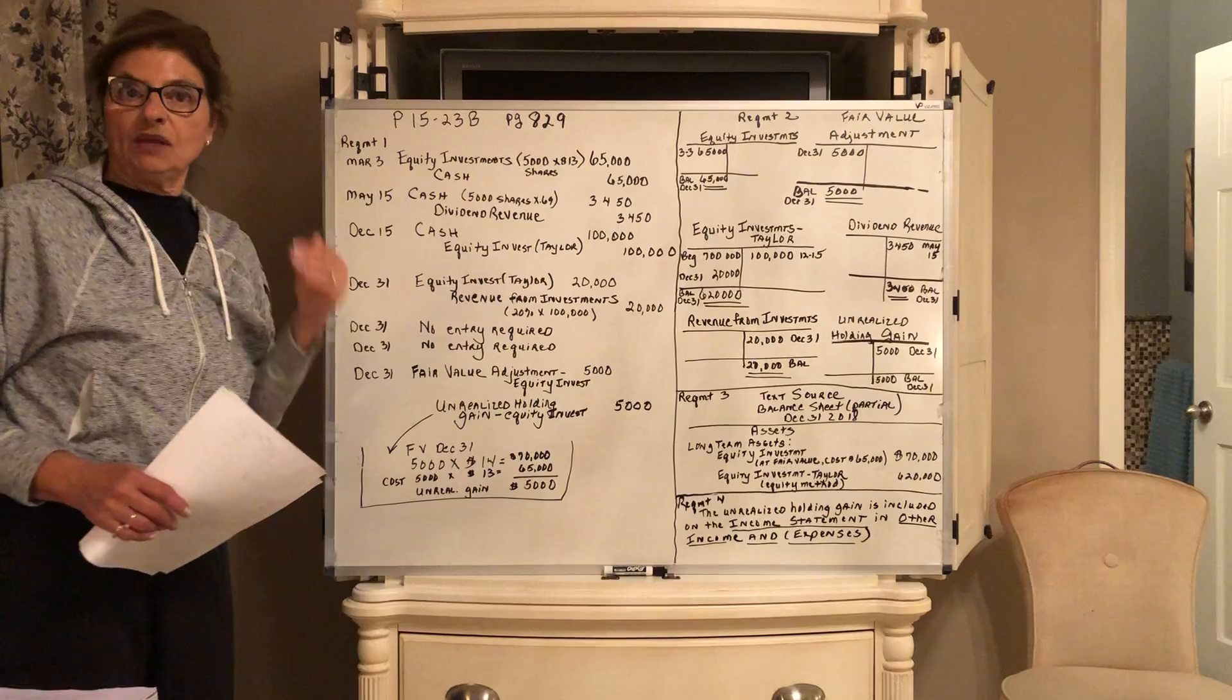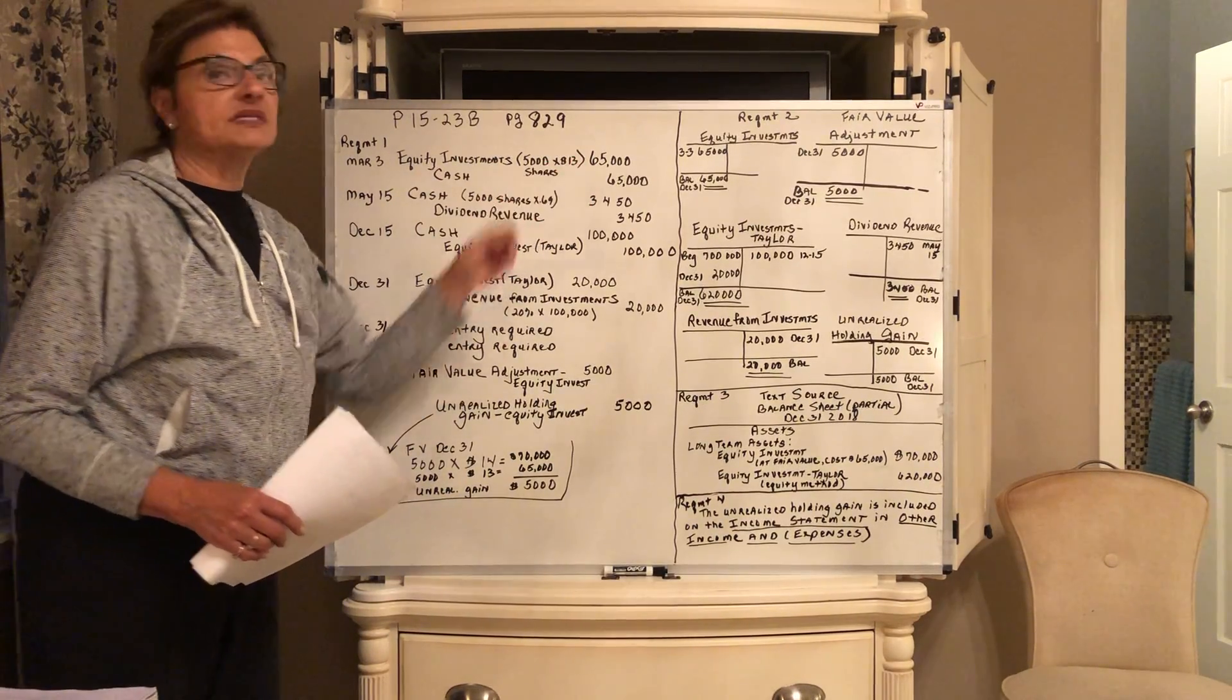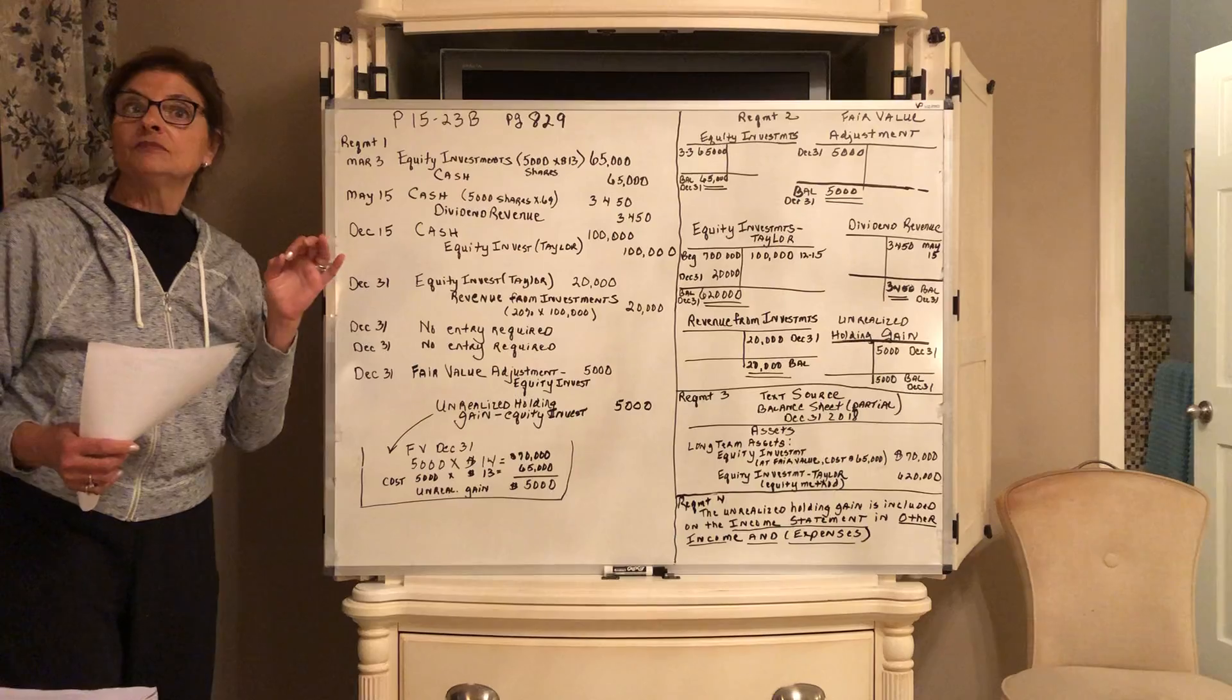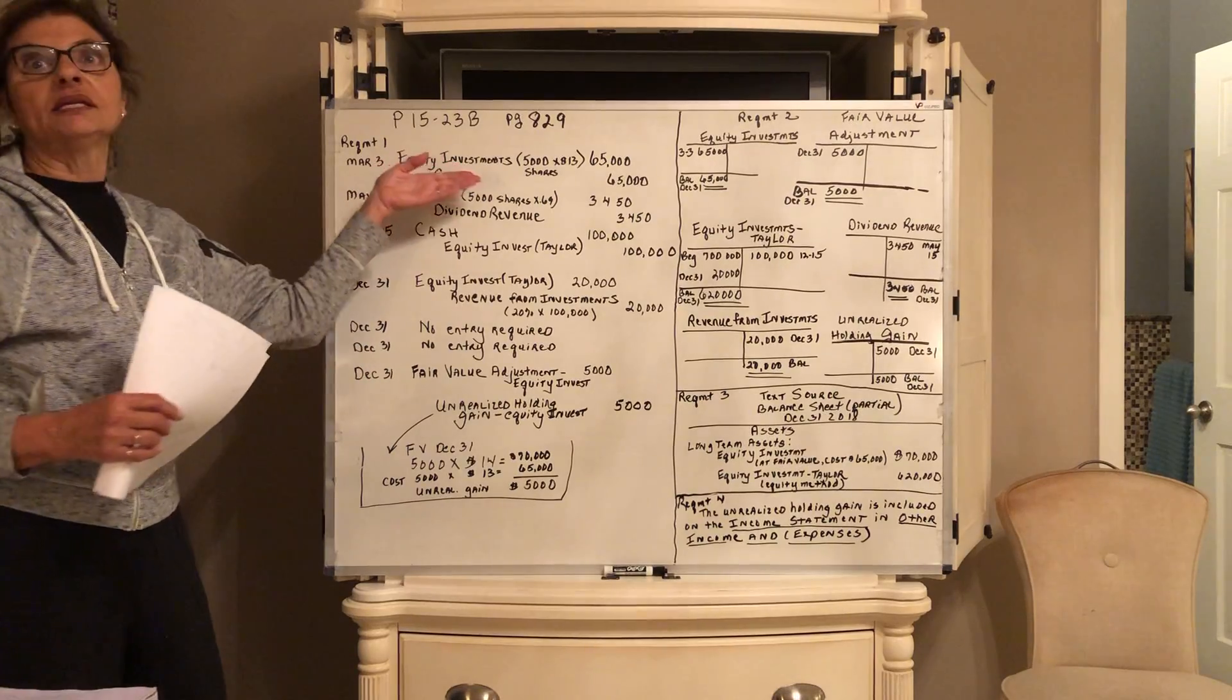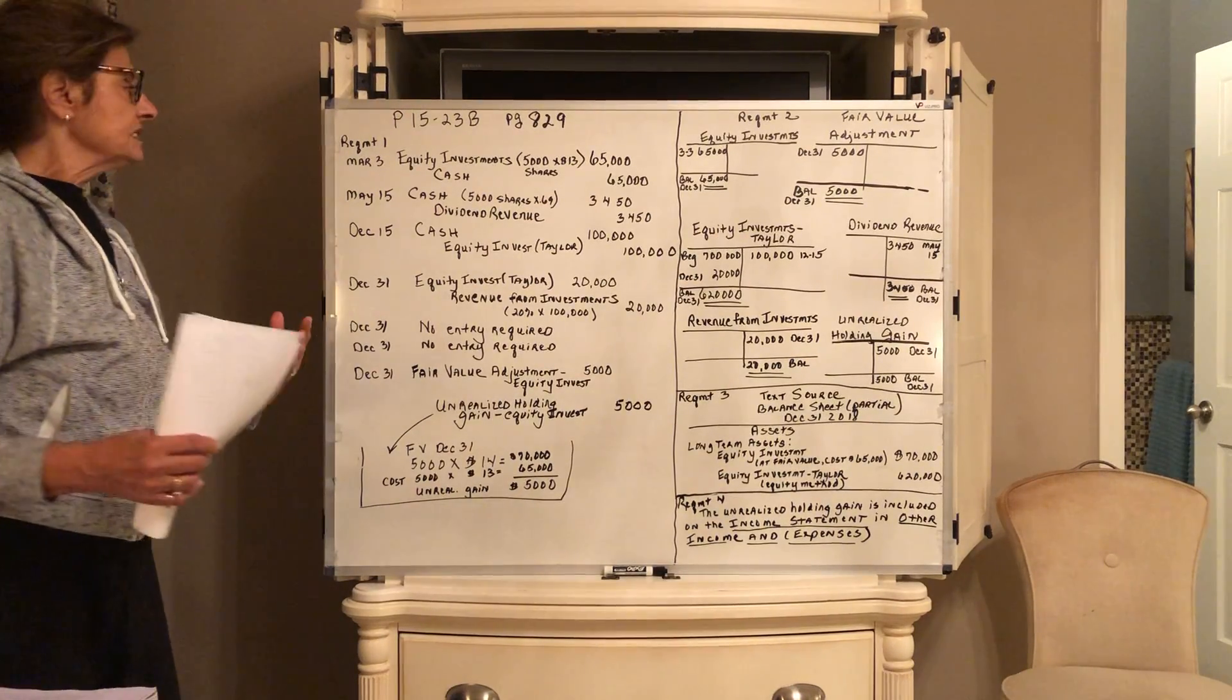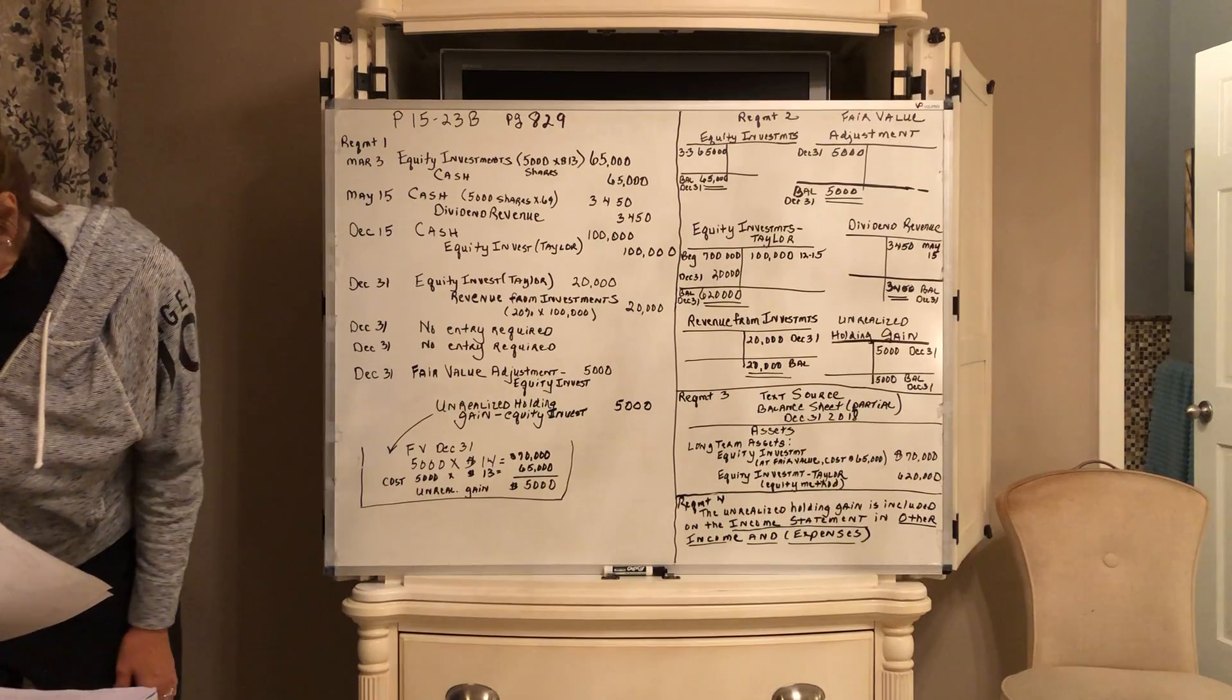They're going to have here no significant influence. Remember, under 20% is no significant influence in that investee company. We're going to debit our investment account, equity investments. They're purchasing 5,000 shares at $13 per share, so it's going to cost them $65,000. We debit that equity investment. When it's less than 20%, we don't have to name the company. When it's between 20 and 50%, we do have to name the company, but we still call it an equity investment. That's $65,000, credit cash for $65,000.